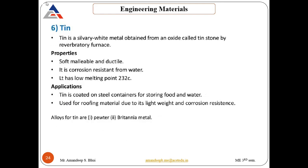Tin is a silvery-white metal obtained from an oxide called tin stone by reverberatory furnace. Properties: soft, malleable and ductile; good corrosion resistance from water; low melting point around 232 degrees centigrade. Applications: tin is coated on steel containers for storing food and water, used for roofing material due to light weight and corrosion resistance. Alloys of tin include pewter and Britannia metal.